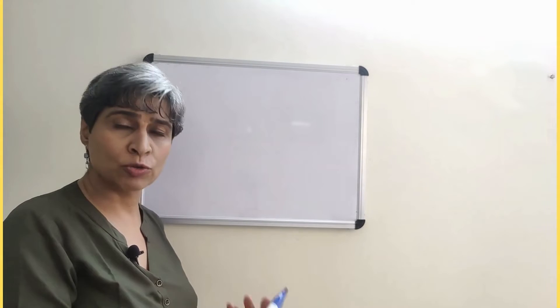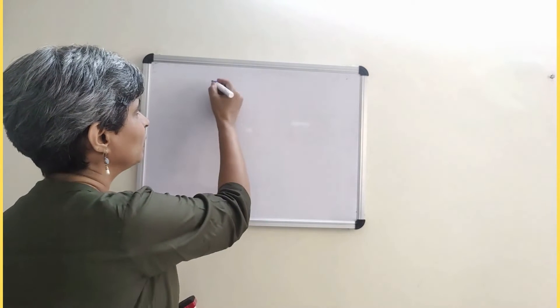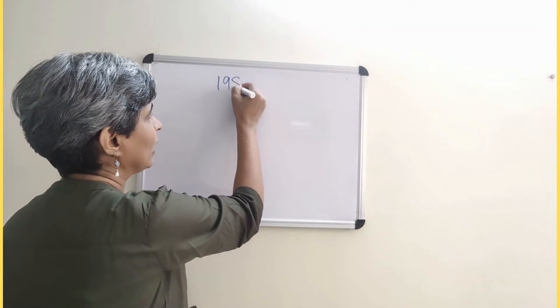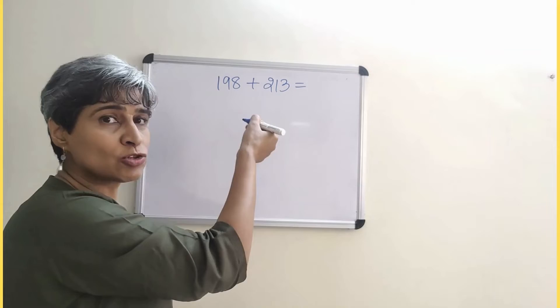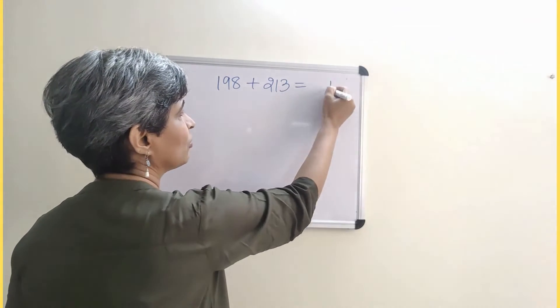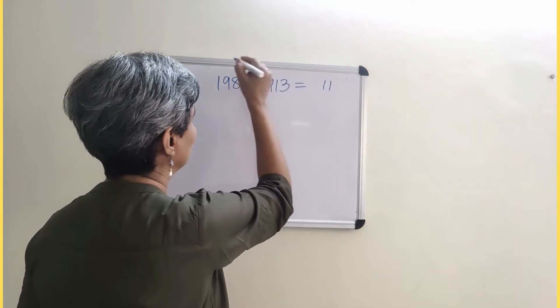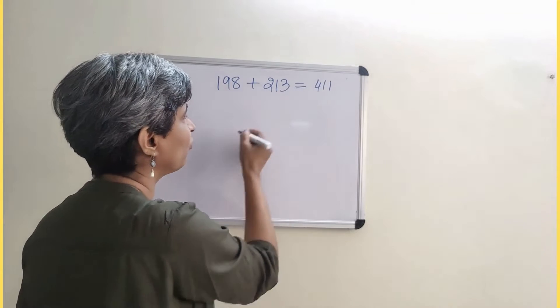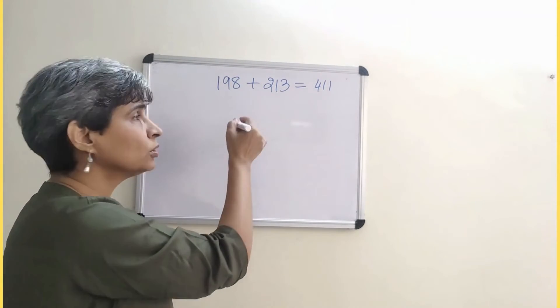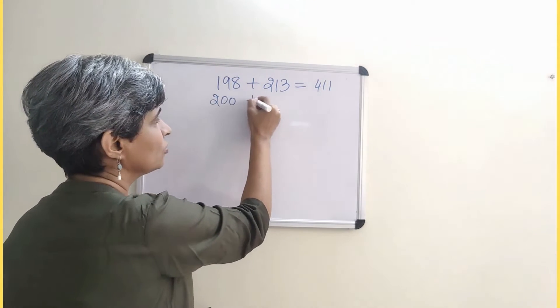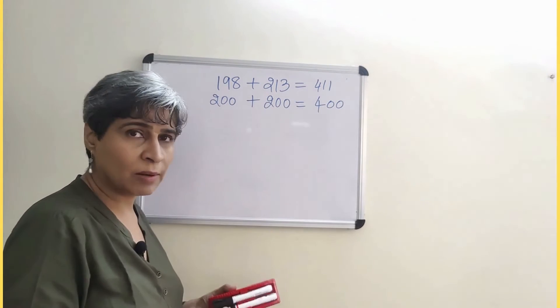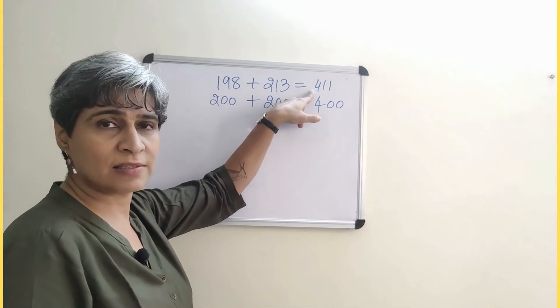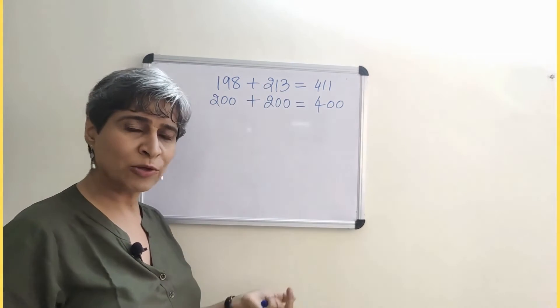If I try it with addition, if I take 198 and I want to add it to 213, let's actually add. 8 plus 3 is 11, 1 plus 9 is 10, plus 1 is 11, 1 plus 1 is 2, 2 plus 2 is 4. 198 rounds off to 200, 213 also rounds off to 200. My answer should be somewhere around 500. It is, it's 411, so I know that it must be correct.